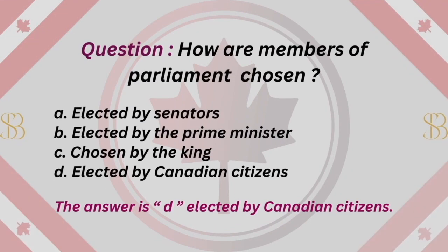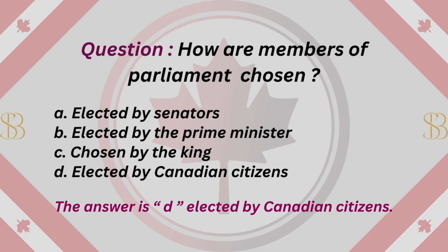Question: How are members of Parliament chosen? A. Elected by Senators. B. Elected by the Prime Minister. C. Chosen by the King. D. Elected by Canadian citizens. The answer is D. Elected by Canadian citizens.